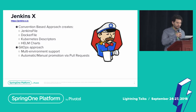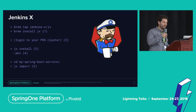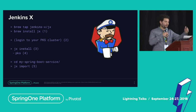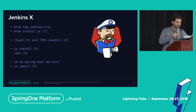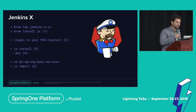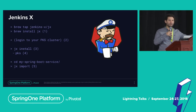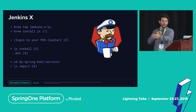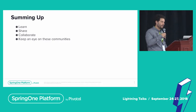They use a GitOps approach which basically allows you to have all the environments in different Git repositories. Installing JenkinsX is extremely easy — five steps. You install the CLI, then you log into your cluster, you install the services in there, and then you just import your Spring Boot application and voilà — you go from code to something running inside your Kubernetes cluster in no time.